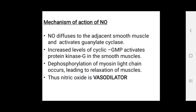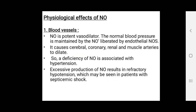Dephosphorylation of the myosin light chain occurs, leading to relaxation of smooth muscles; thus nitric oxide acts as a vasodilator. The physiological effect of nitric oxide in blood vessels: nitric oxide is a potent vasodilator.